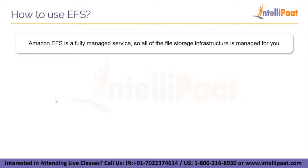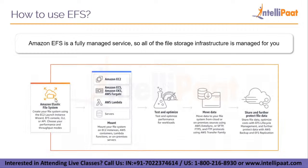An Amazon EFS file system grows and shrinks automatically as you add and remove files, so you don't need to manage storage provisioning or procurement. Below is a diagram that illustrates the different stages involved in deploying a file system. Firstly, you need to create your file system using the EC2 launch instance wizard.